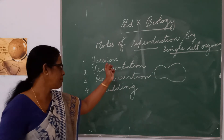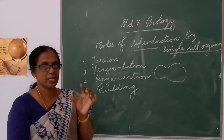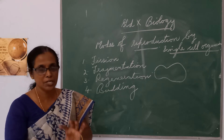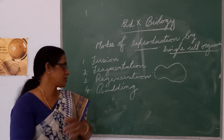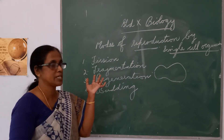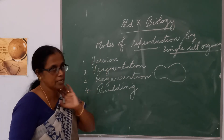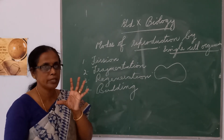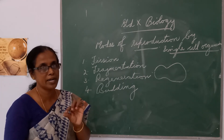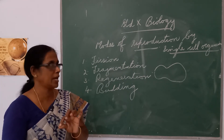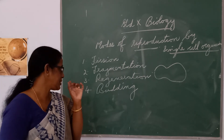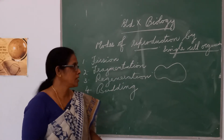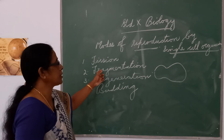In the case of amoeba, binary fission takes place — the body divides into two. In Leishmania also a process like binary fission takes place. But in the case of Plasmodium, one cell divides into many different cells. That is also a type of fission — fission means division.